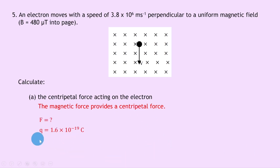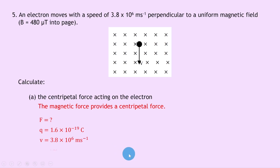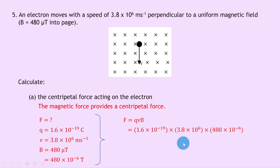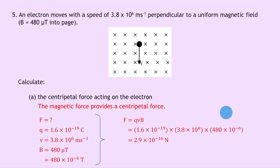Charge q on the electron is 1.6e-19 coulombs, speed v is 3.8e6 meters per second, and magnetic induction b is 480 microtesla, converted to 480 times 10 to the minus 6 tesla. Using f equals qvb: 1.6e-19 times 3.8e6 times 480e-6 gives 2.9 times 10 to the minus 16 newtons.